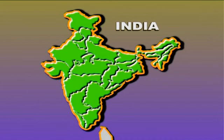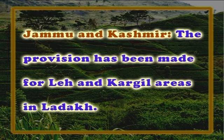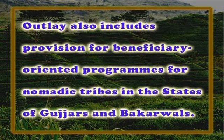Next are backward areas or states. In Gujarat, 25 backward talukas have been identified by the state government and a special provision of rupees 2 lakhs annually is envisaged for each taluka, that is rupees 50 lakhs annually for 25 talukas. In Jammu and Kashmir, the provision has been made for Leh and Kargil areas in Ladakh. Outlay also includes provision for beneficiary-oriented programs for nomadic tribes such as the Gujars and Bakarwals.